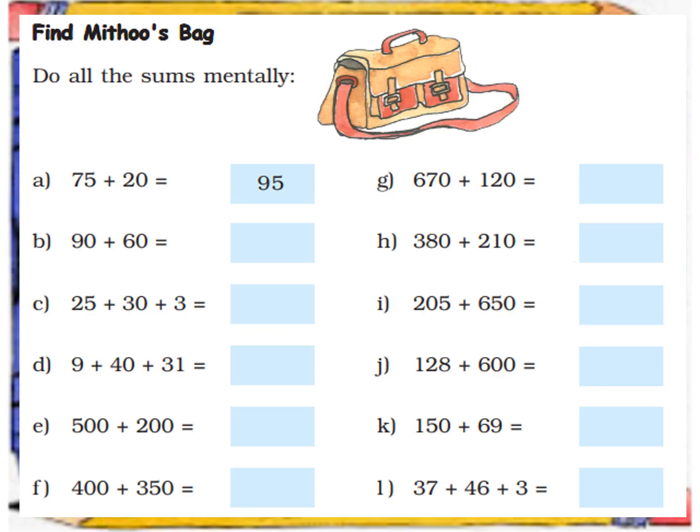So now we will be applying these simple tricks to solve these mental math sums. First one is already done for you. We will move on to the second one. We have 90 plus 60 here, so we will apply the trick of 9. Instead of adding 9 to 6, we will add 10 to 6 which will make it a 16, and then we will reduce 1. Next we have 25 plus 30 plus 3, so we will add 25 and 30 together, we will get 55, and then we will add a 3 to it to get 58.